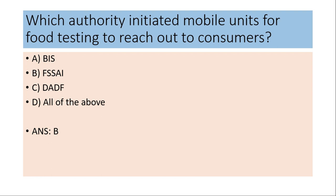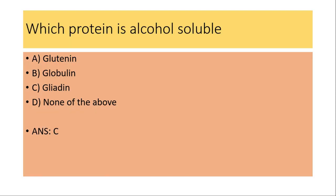Which authority initiated mobile units for food testing to reach out to consumers? (a) Bureau of Indian Standards, (b) FSSAI, (c) Department of Animal Husbandry, Dairying and Fisheries, (d) All of these. The answer is (b) FSSAI.